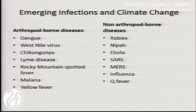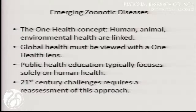In terms of emerging infections and climate change specifically, we should divide it up between the arthropod-borne diseases and the non-arthropod-borne diseases. With the exception of rabies, many of these non-arthropod-borne diseases are the result of humanity's quest for meat — many of them evolve either directly or indirectly from meat production or the raising of animals. Some come from the consumption of bushmeat. In terms of emerging zoonotic diseases, global health must be viewed with a One Health lens rather than solely focusing on human health.